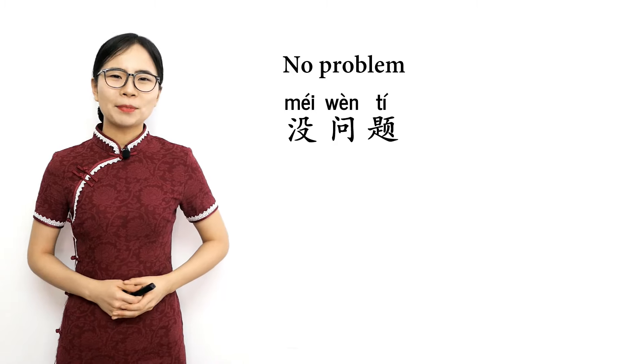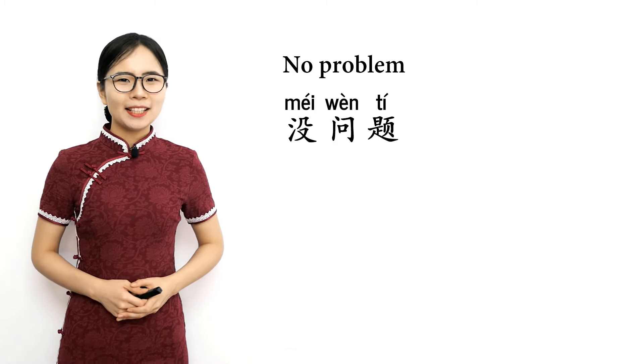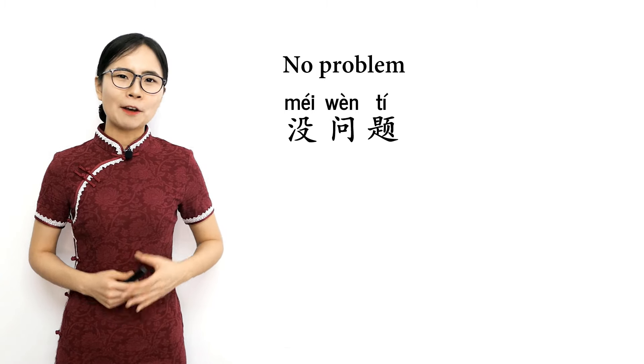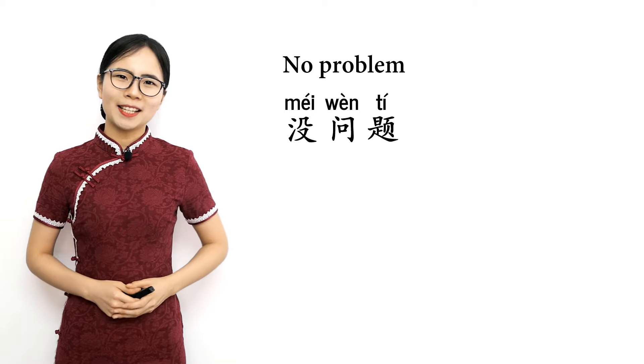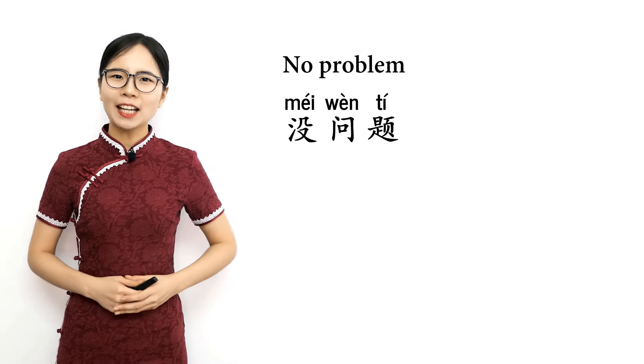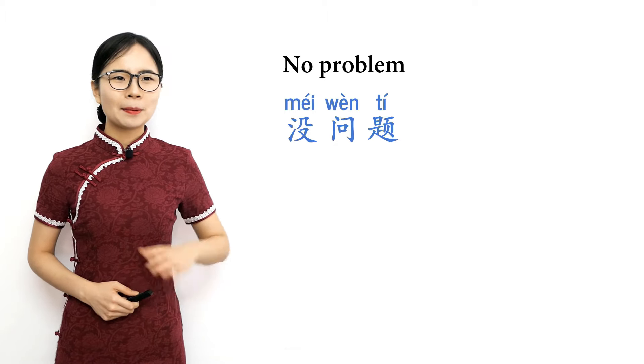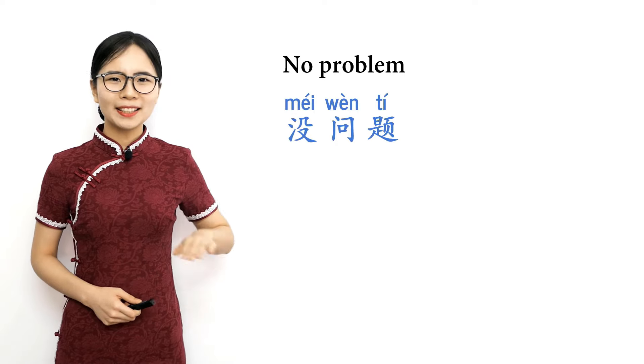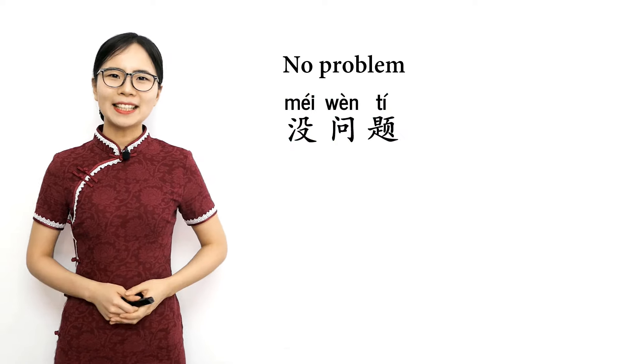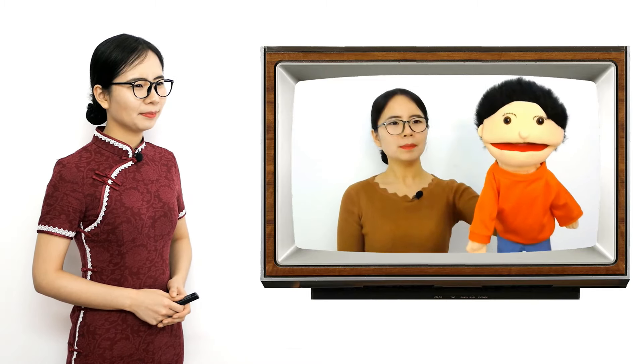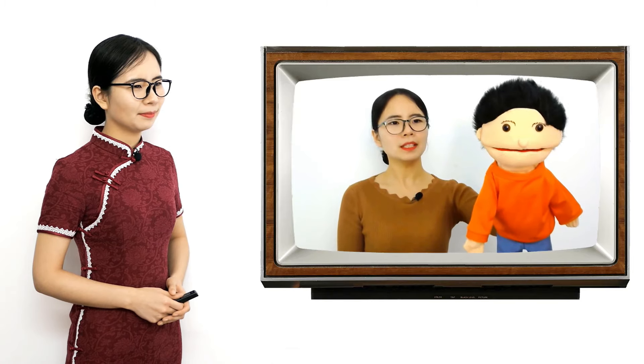You can tell someone that something is not a problem by saying 没问题. You can say 没问题 if someone asks a favor from you, asks you to wait for a bit, or tells you they're going to be late. Please repeat after me: 没问题, 没问题 — no problem. 你明天忙吗？ — are you busy tomorrow? 我明天有汉语考试 — I have a Chinese exam tomorrow. 你能帮我复习一下吗？ — can you help me review? 没问题 — no problem.